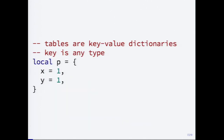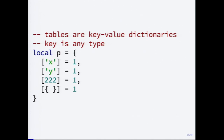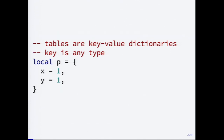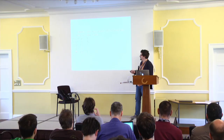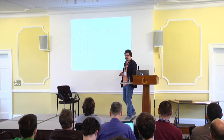The table is a key-value dictionary where the key can be of any type, unlike in JavaScript where keys can only be strings. The dot-access syntax is just shorthand for indexing with a string key, or the key can be a number, or even another table can be a key as well.